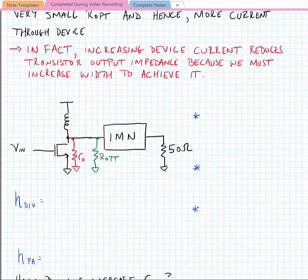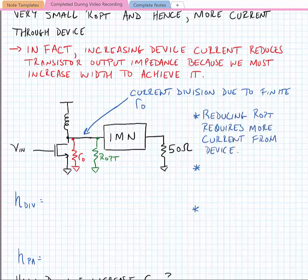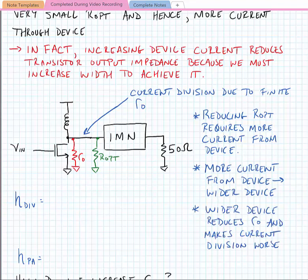Here we have a simple amplifier that has an output resistance r_o and a matching network transforming 50 ohms to an impedance R_opt. We see immediately that we have a current division at the drain of the transistor due to the finite output resistance, and it's non-ideal. We get into a feedback loop problem where reducing R_opt requires more current from the device. More current from the device means we need a wider device, the wider device reduces the output resistance and makes our current division worse.